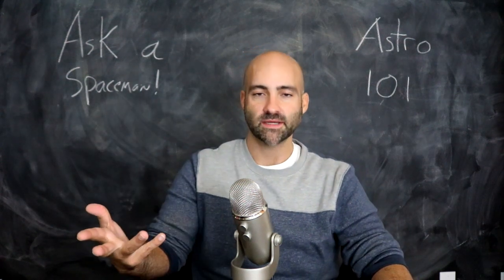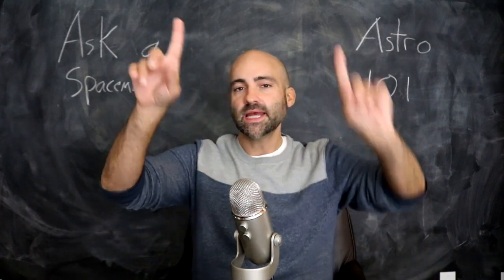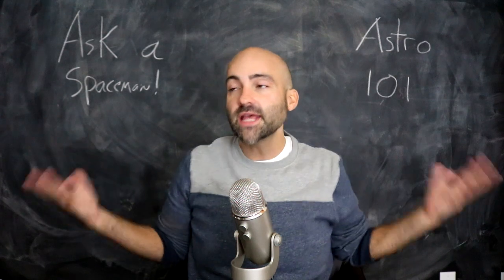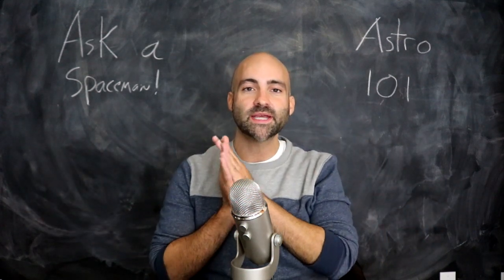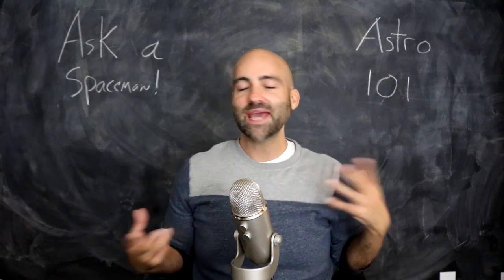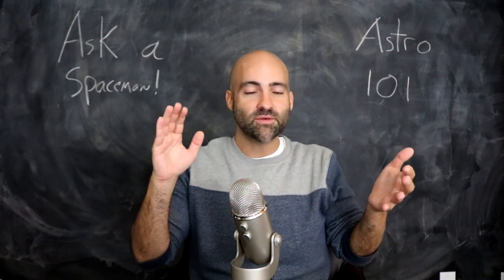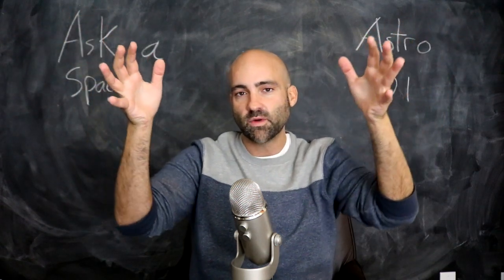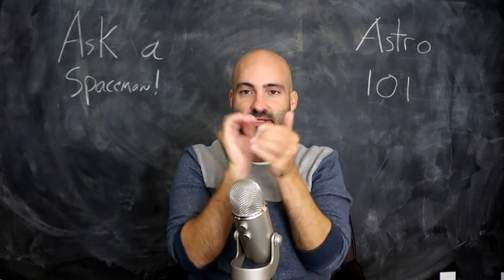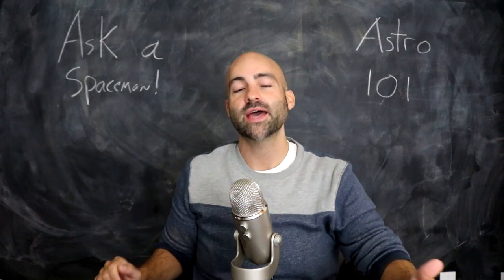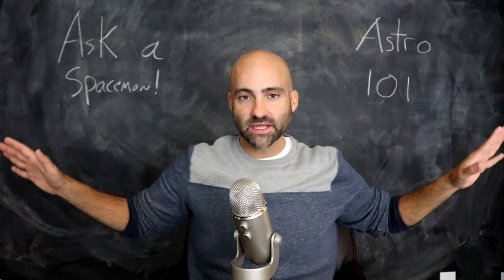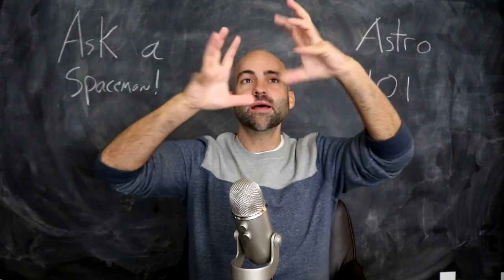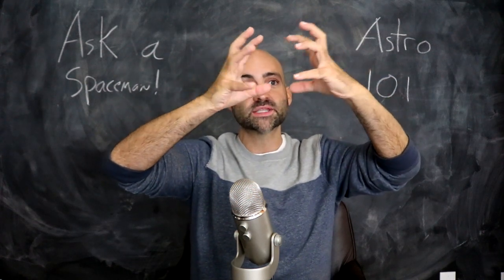Stars are born from nebulae, but not just any nebula can produce a star. It has to be something called a giant molecular cloud. A giant molecular cloud is a nebula, but it's a special kind because it's relatively cool. If the gas in a nebula is too hot and too energized, it won't be able to contract — it'll just keep floating around. To make a star, you want that material to collapse and scrunch down, and to do that you need it to be cold.